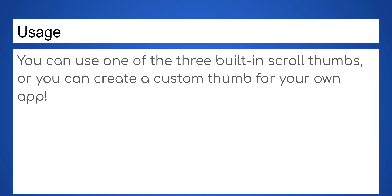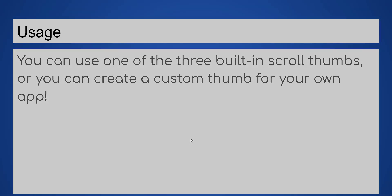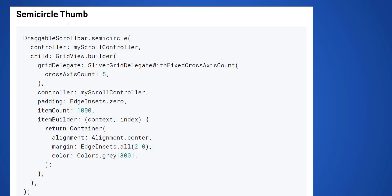You can use one of the three built-in scroll thumbs, or you can create a custom thumb for your own app. The following are the examples you can use to implement, and in the next slides we will see how to implement them.